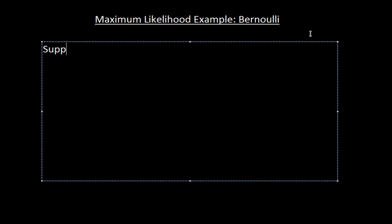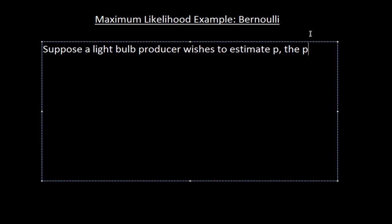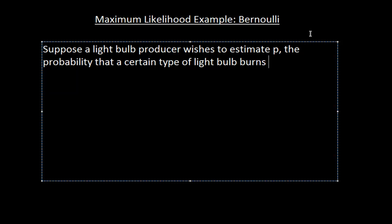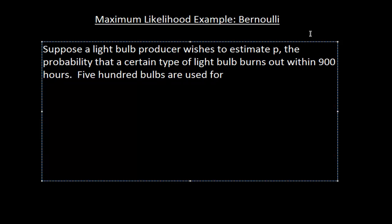In this video I'm going to demonstrate another example of maximum likelihood estimation. Suppose a lightbulb producer wishes to estimate P, the probability that a certain type of lightbulb burns out within 900 hours. This would be important for issuing a warranty or comparing products. To test it, 500 bulbs are used for 900 hours each and 31 of these bulbs burn out.